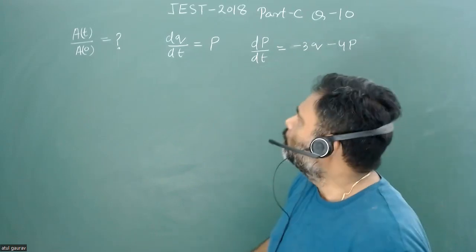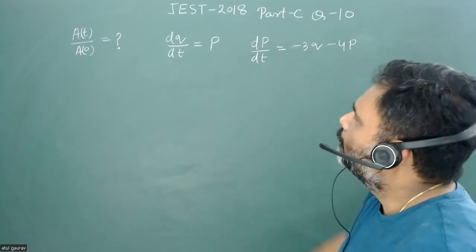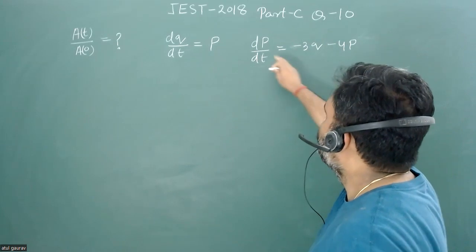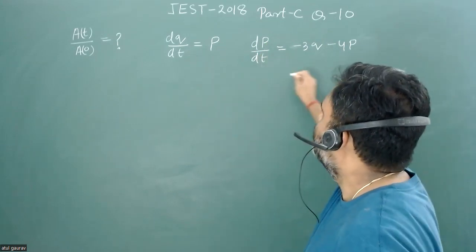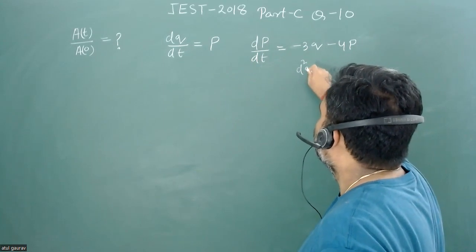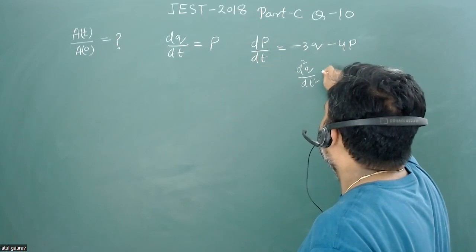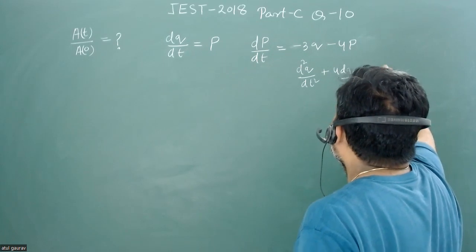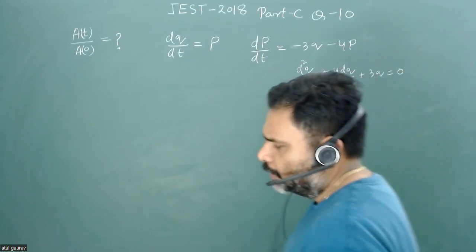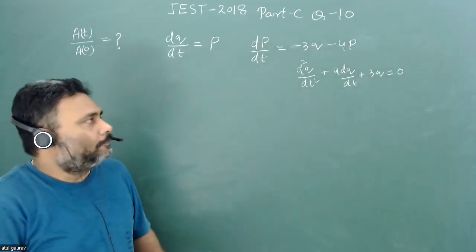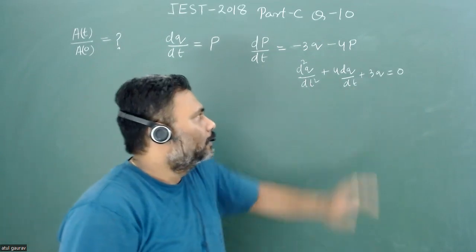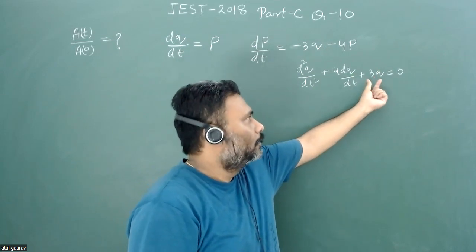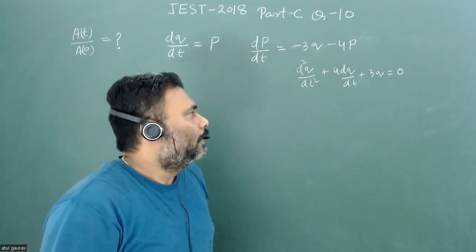Looking at these two equations carefully, if we substitute dq/dt = p, we can write the second-order differential equation: d²q/dt² + 4(dq/dt) + 3q = 0. This differential equation looks just like a damped oscillation with damping constant 4 and natural frequency squared equal to 3.